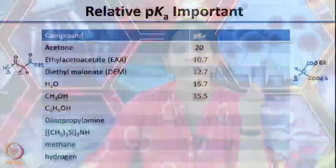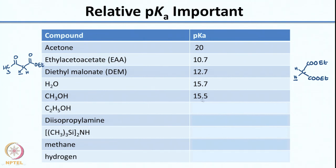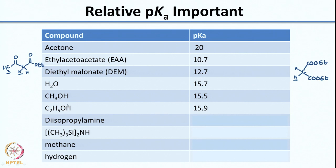Now let us look at the conjugate acids of the bases. If you have ethoxide as the base, the conjugate acid is ethanol. Methanol has a pKa of 15.5. Ethanol would have a higher pKa because it is less acidic — it has an extra electron-releasing CH2 group. Also, once you generate ethoxide, stabilization due to solvation is less compared to methoxide. If you had isopropoxide, the pKa would be even higher because solvation of the ion is worse due to bulk.